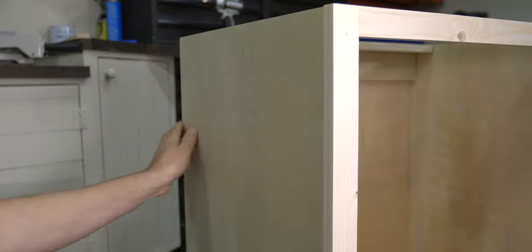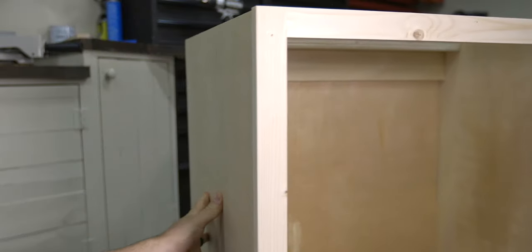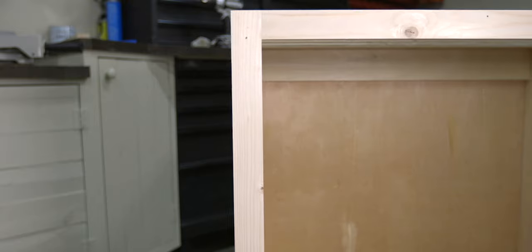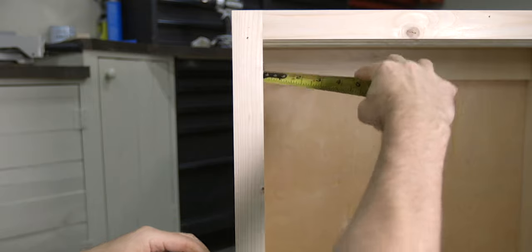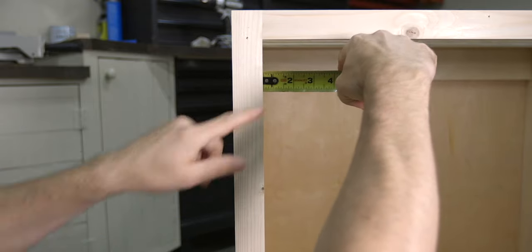Because I want my cabinet to have two finished sides, meaning that once it's installed you're going to see both sides, I'm choosing to have the face frame styles overhang the box by a quarter of an inch, which leaves a half inch reveal on the inside.